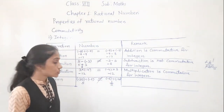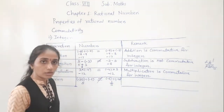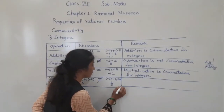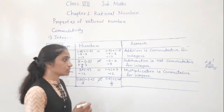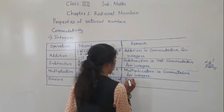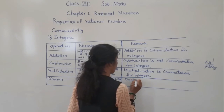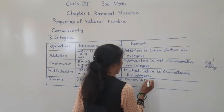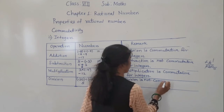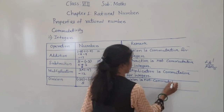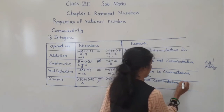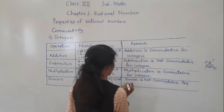So we write here: division is not commutative for integers.